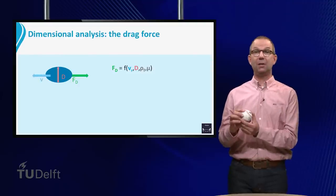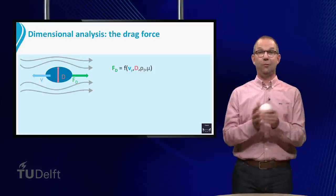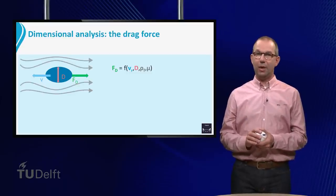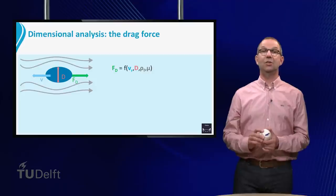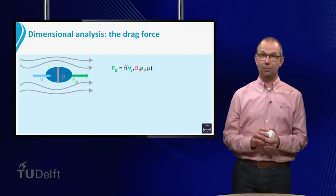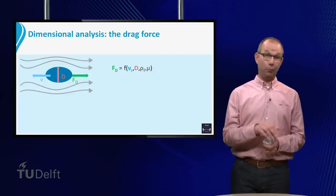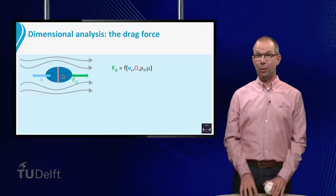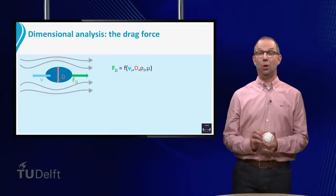speed of the object v, and two fluid parameters, density and viscosity, mu and rho. Note that we have given the velocity as subscript r from relative, as it is the relative velocity between the object and the fluid that is important. Furthermore, we give the density as subscript f from fluid, to remind us that it is the density of the fluid flowing around the object that is important, not the density of the object itself.